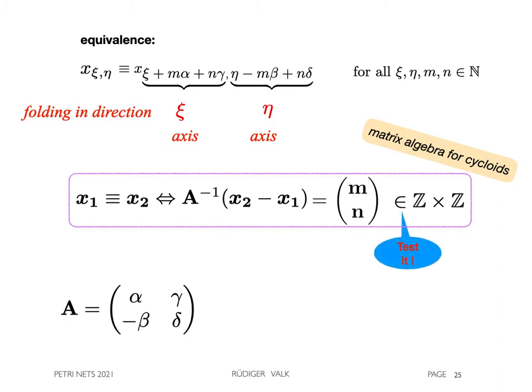A is called the matrix of the cycloid. Its inverse is defined since the determinant of A is greater than zero.